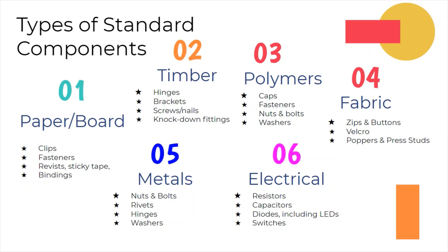For metals, standard components include nuts and bolts, rivets, hinges and washers. The standard components often seen in electrical items are resistors, capacitors, diodes including LEDs, transistors and drivers, microcontrollers, switches and motors.